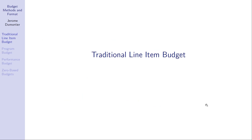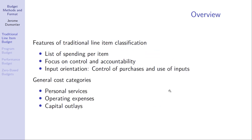Traditional line-item budgets feature a list of spending per item. Think about a municipal library — you would list the number of books to purchase and the per unit cost, or the number of employees along with salaries and fringe benefits. Traditional line-item budgets are very much focused on inputs; they control for the purchases and use of inputs.